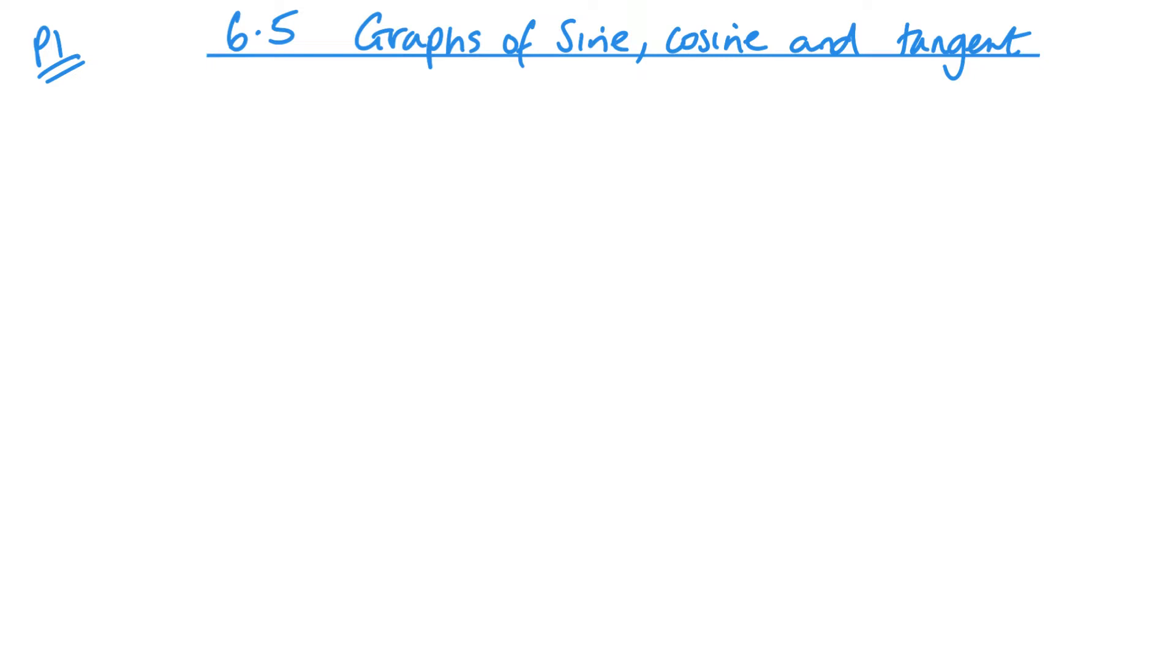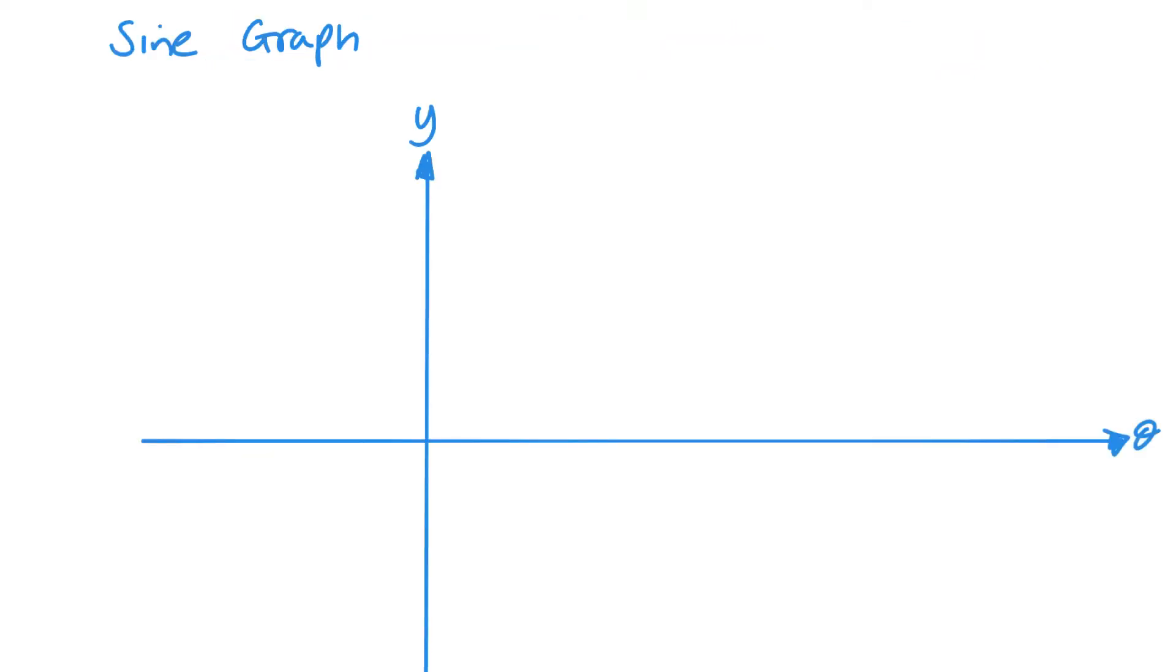So let's get started. First we're going to look at the sine graph, and specifically y equals sine theta. Drawing this graph is quite straightforward. It's going to start at zero, zero and look roughly like that. It's going to cross here at 180 and again back at 360.